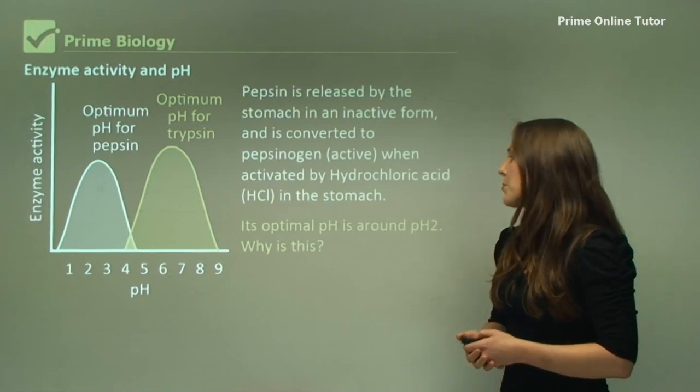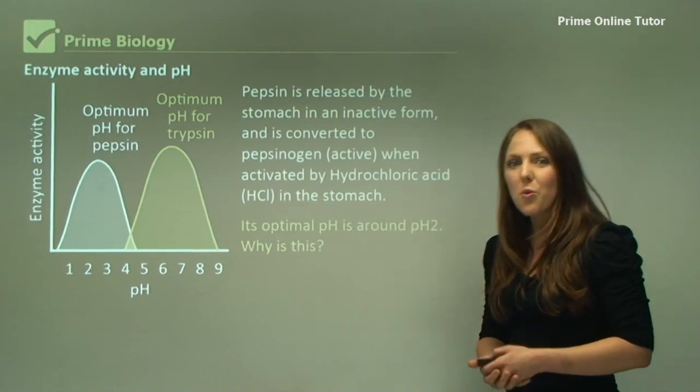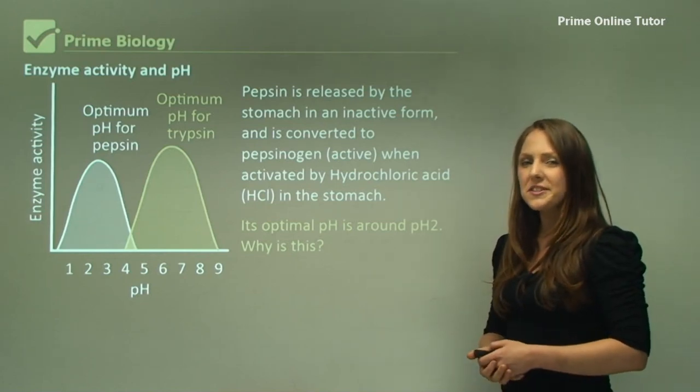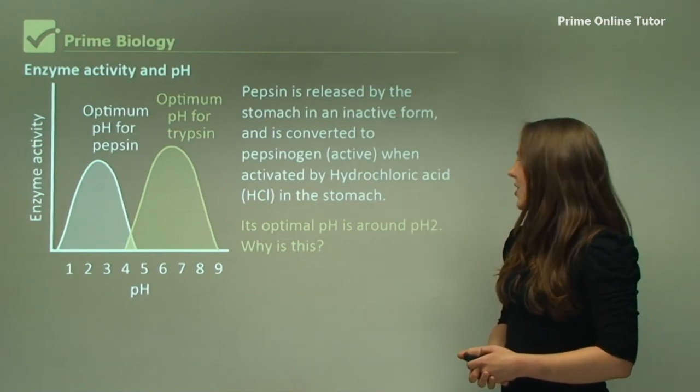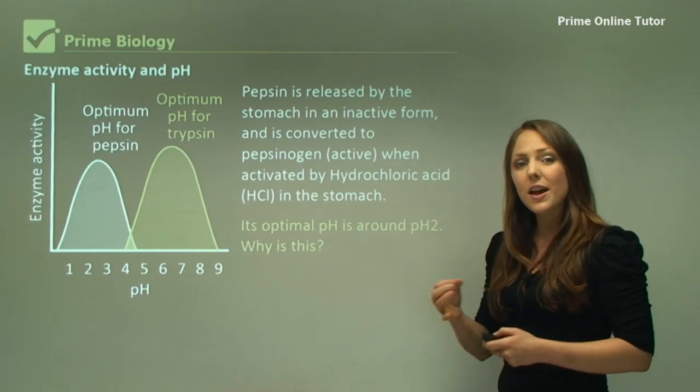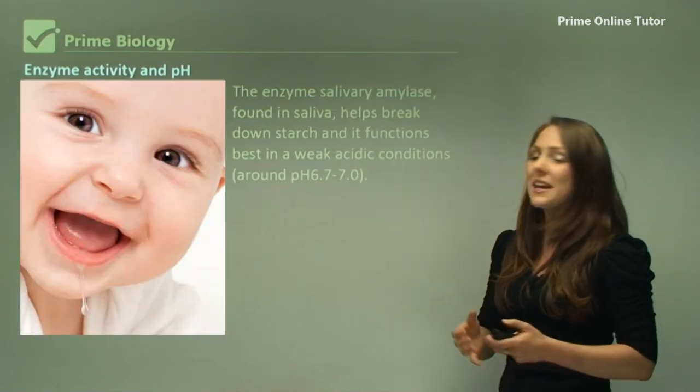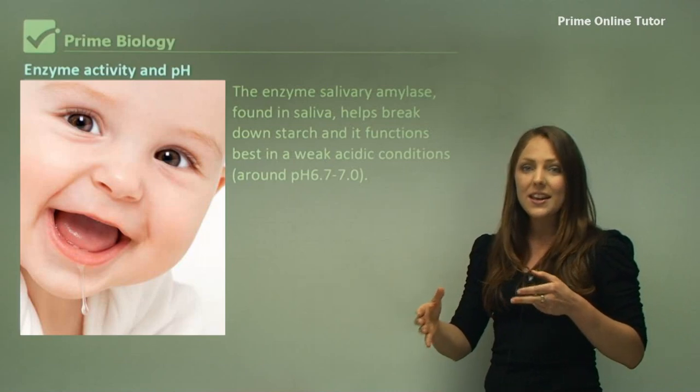So its optimal pH is around pH 2. Why do you think this is? The reason why its pH is around 2 is because the stomach's pH is around about 1.5 to 3. It changes and fluctuates.